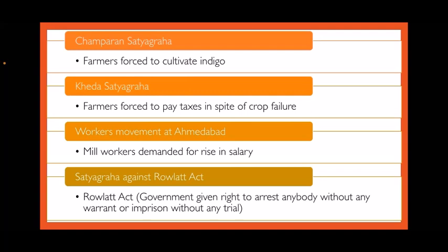The next is the Khera Satyagraha. Khera is a district in Gujarat where farmers were forced to pay taxes in spite of crop failure. Gandhiji suggested that the farmers should refuse to pay the tax. The farmers began the movement in 1918 with Gandhiji as their leader, and within a short period of time the government was forced to suspend the tax.